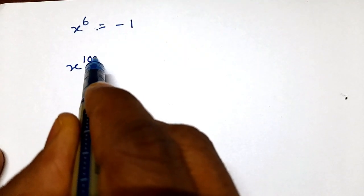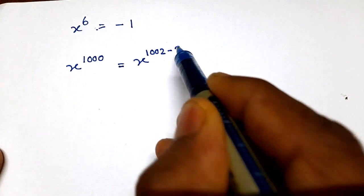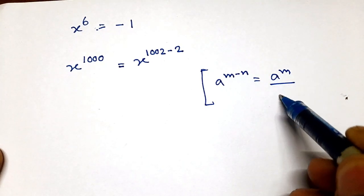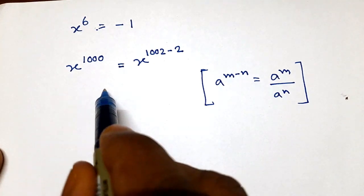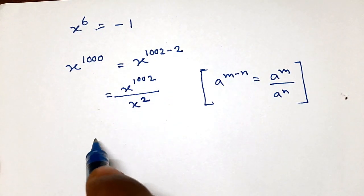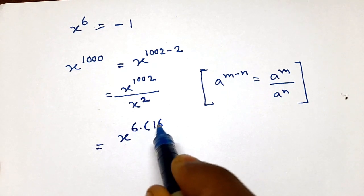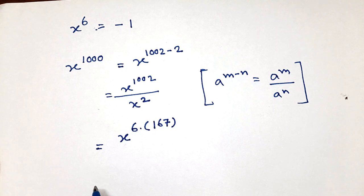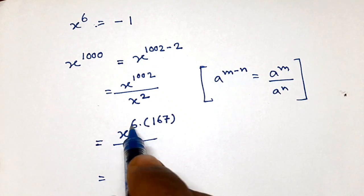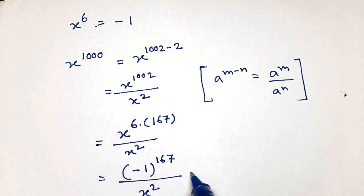Now we have x to the power 1000 to find. We can write x^1000 as x to the power 1002 minus 2. We know that a^(m-n) = a^m divided by a^n, so we can write this as x^1002 divided by x². Now 1002 equals 6 times 167, so the numerator is x to the power 6, raised to the power 167, divided by x². Since x⁶ = -1, this becomes (-1)^167 divided by x².